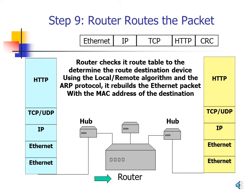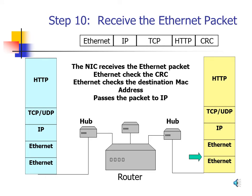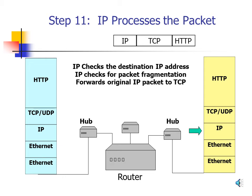Step 10: The Destination Computer Receives the Ethernet Packet. The destination computer first checks the CRC to verify the packet isn't corrupt; if corrupt, the Ethernet card discards it and waits for the next one. If the CRC checks out, the Ethernet station checks the destination MAC address against its own — if they don't match, the packet is ignored. If they match, Ethernet checks the Ethernet type field, which is set to 0x0800, indicating the payload is an IP packet, and passes the contents to the IP program.